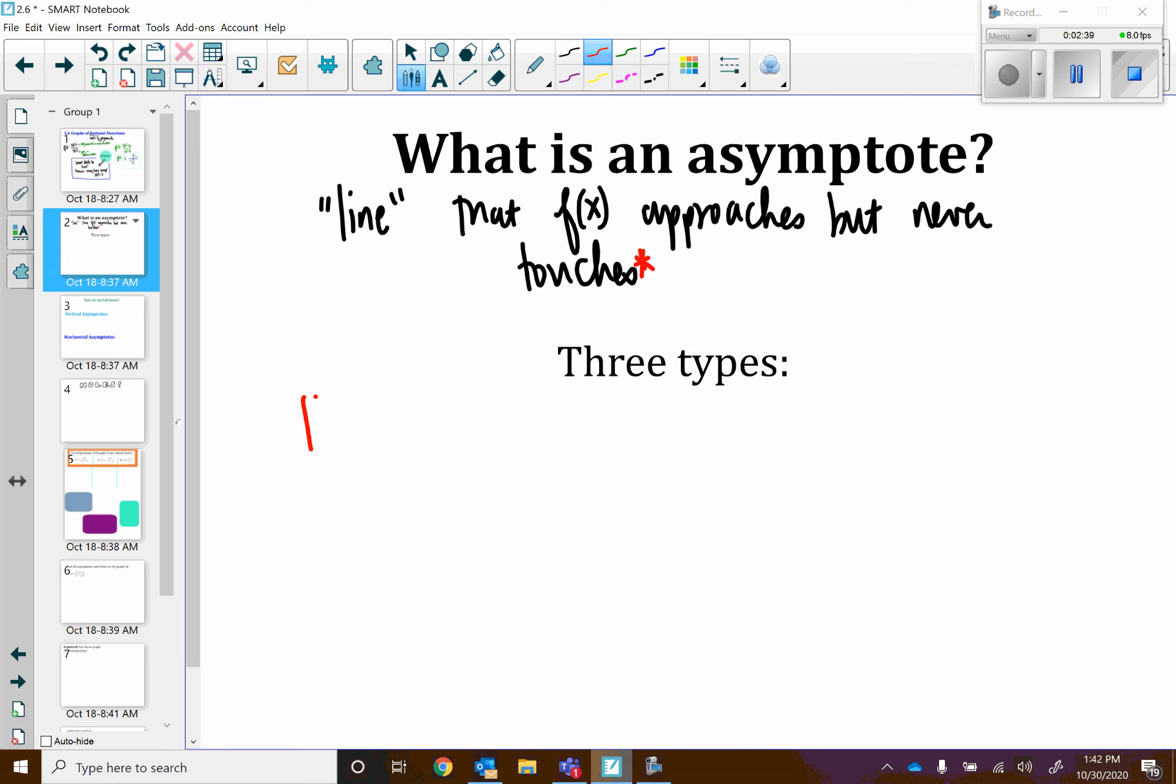And there's three main types. There is horizontal, there's vertical, and slant asymptotes.